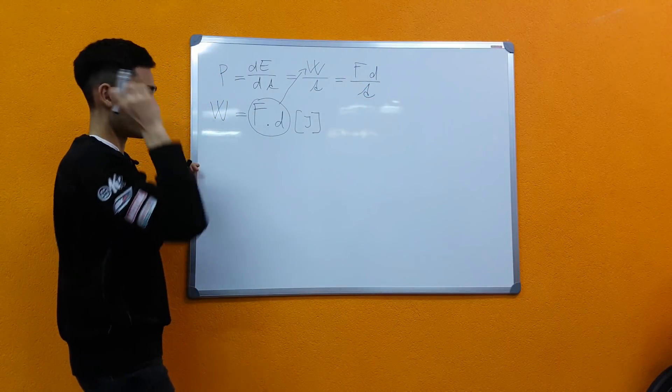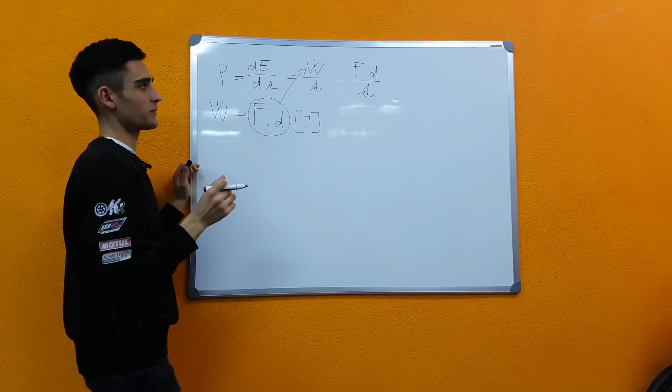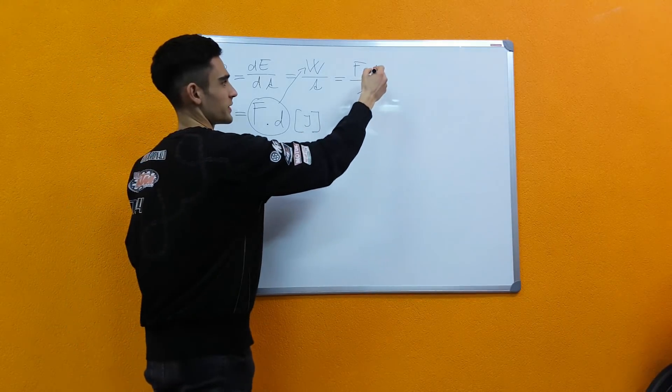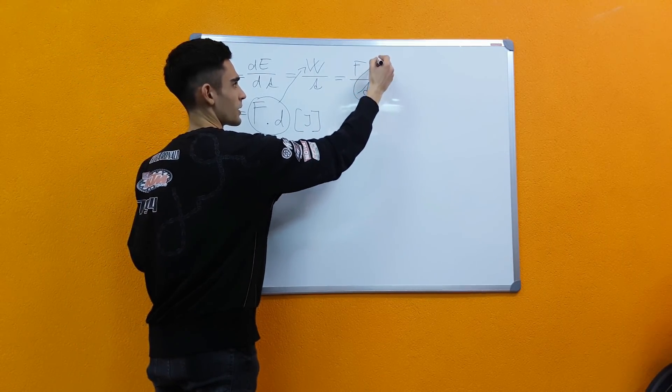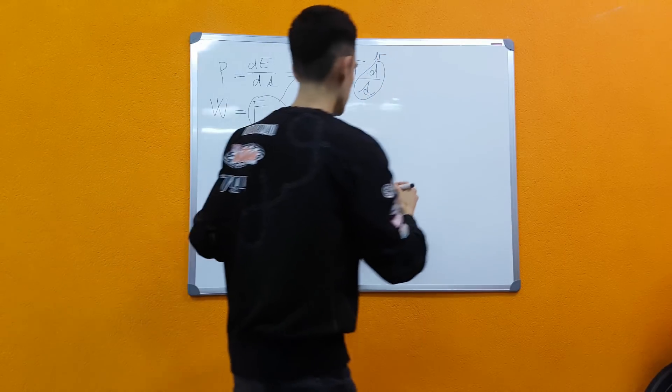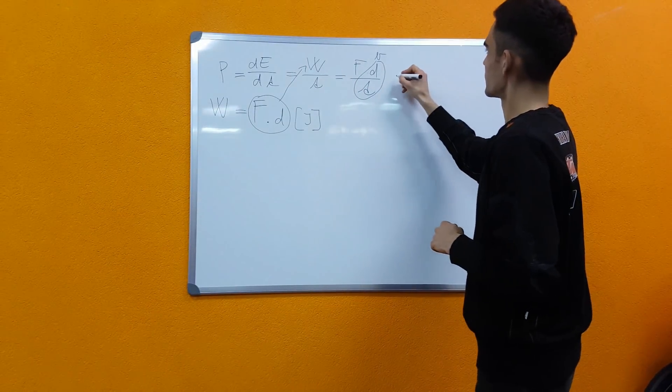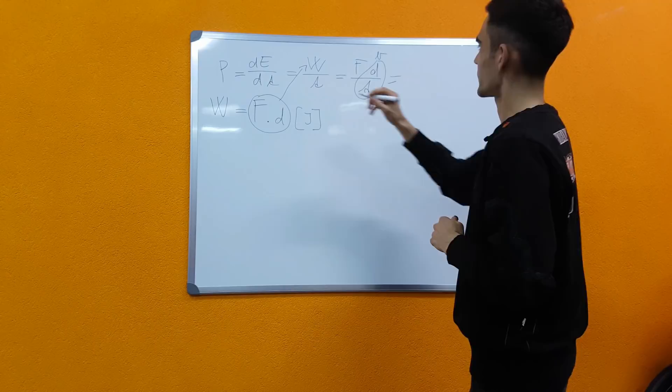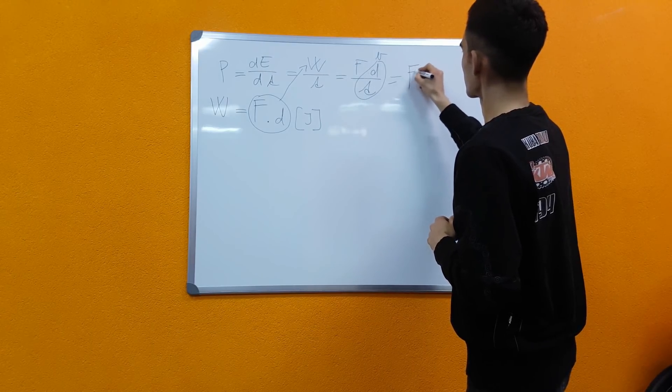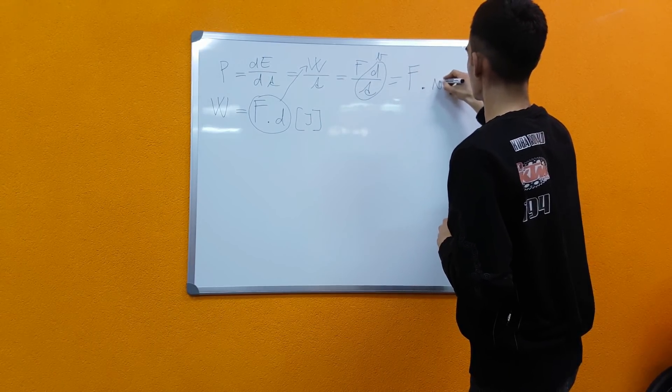Now this might seem a bit familiar because distance over time, this is velocity. So what we end up with is that power equals force times velocity.